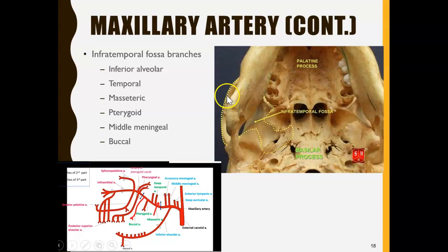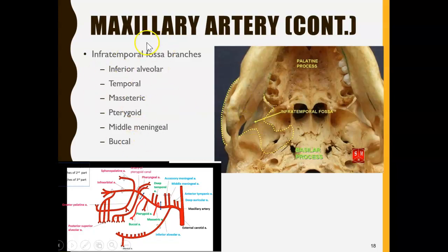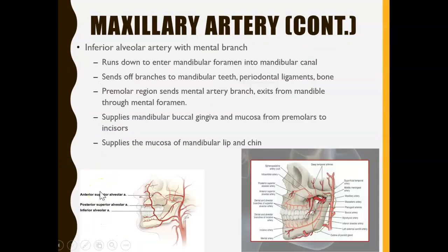The maxillary artery threads through an area known as the infratemporal fossa. 'Infra' means below, 'temporal' refers to the temporal bone, and a 'fossa' is a depression or indentation. So it's a depression just underneath the temporal bone where the many branches of the maxillary artery are located.